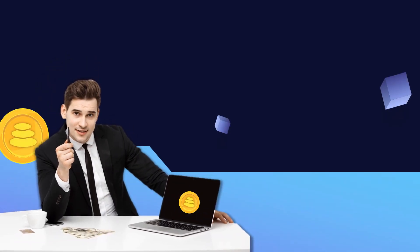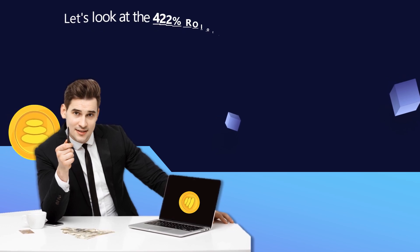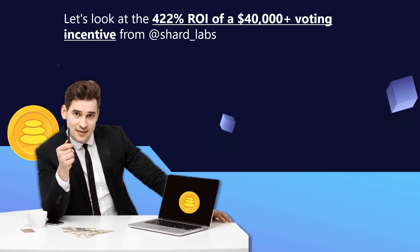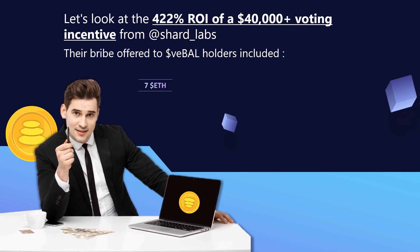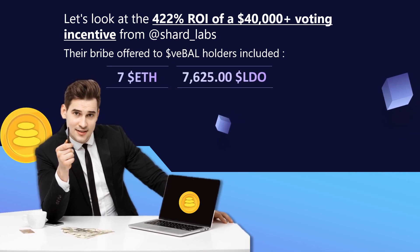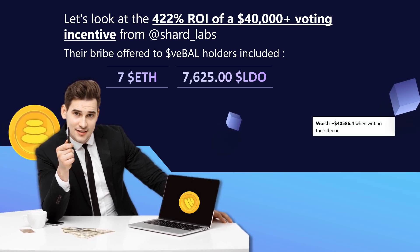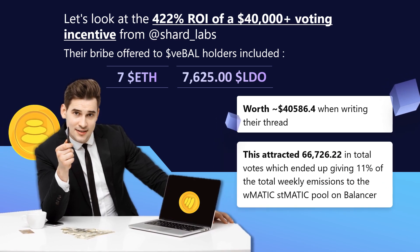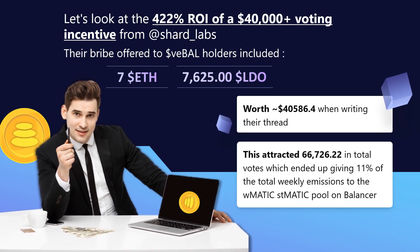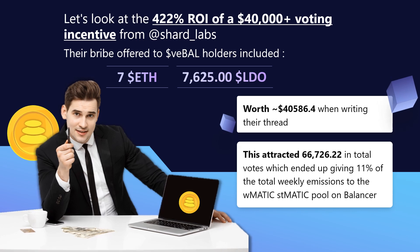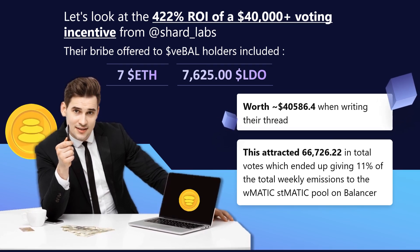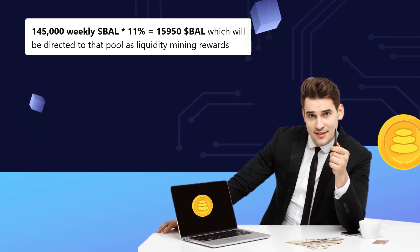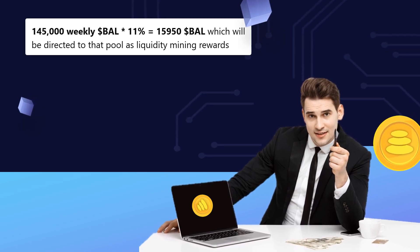To make it clearer, here is an example. Let's look at the 422% ROI of a $40,000+ voting incentive from @shard_labs. Their bribe offered to veBAL holders included $7 ETH and $7,625.00 LDO, worth $40,586.40 at the time of writing. This attracted 66,726.22 in total votes, which ended up giving 11% of the total weekly emissions to the WMATIC/MATIC pool on Balancer.